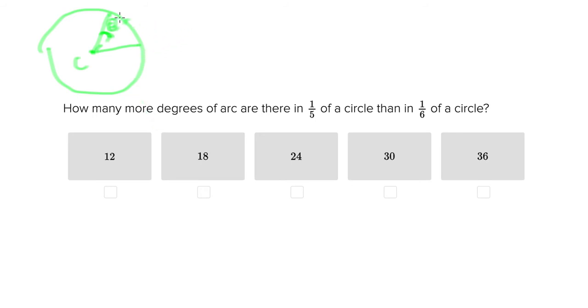So the way that you're going to do this is figure out by how much the arc length is different. And that's going to be the exact same difference of the entire circle as the difference in area. So an easy way to do this is simply to subtract one-sixth from one-fifth.